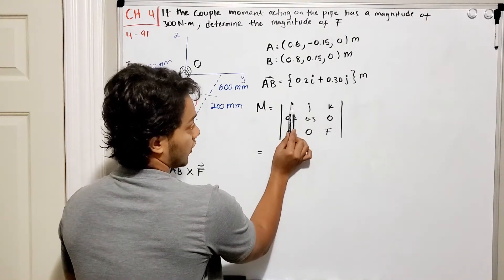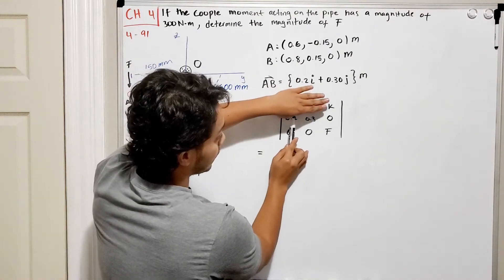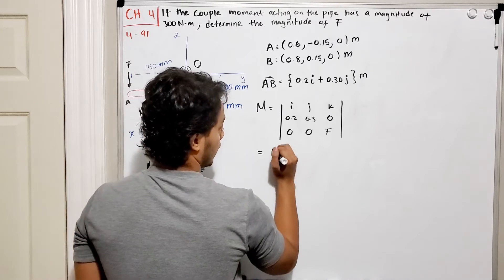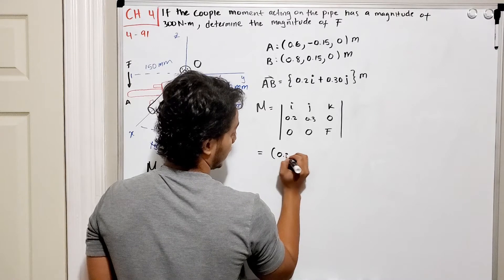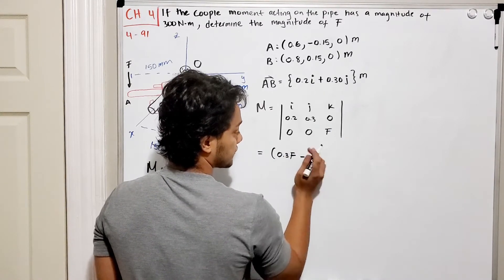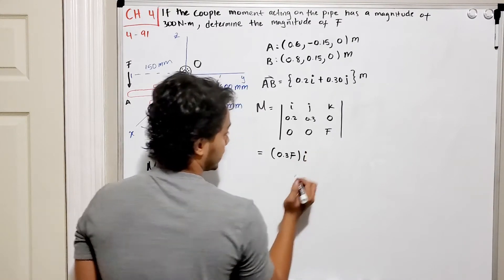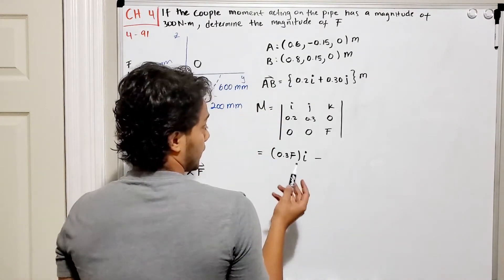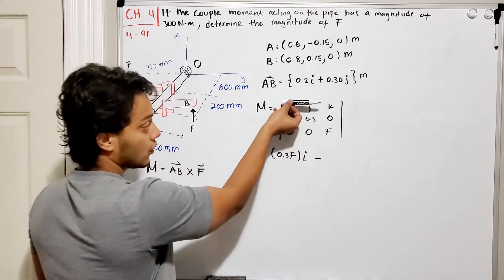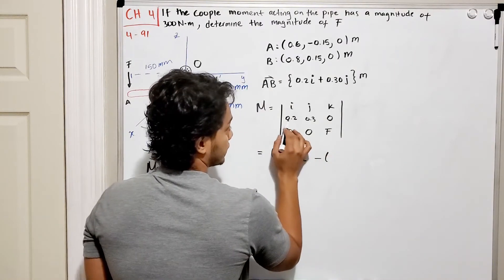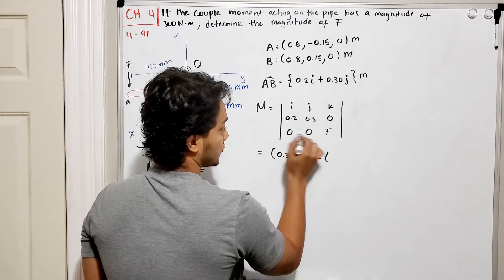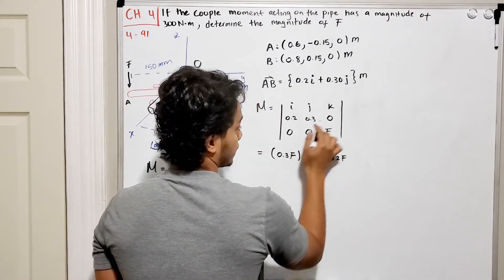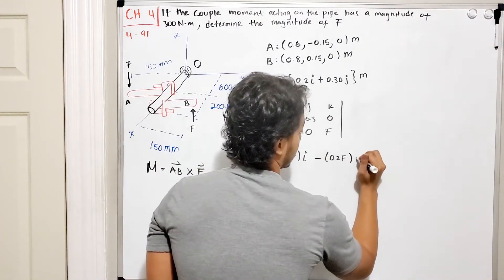To compute the cross product, I hide each column and row in turn. For the i-component: 0.3 times F minus 0 times 0 gives 0.3F in the i-direction. Then minus for the j-component: hiding that column and row, I get 0.2 times F minus 0 times 0, giving 0.2F in the j-direction.